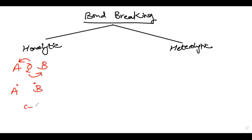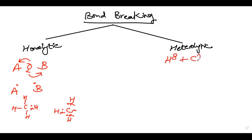For example, C-H bond: in homolytic fission you get a carbon free radical and a hydrogen free radical. In heterolytic fission, H delta-positive and C delta-negative are formed. This is because C is more electronegative, a covalent bond breaks, one of the bonded species takes the shared pair of electrons, and positive and negative ions are produced. Keep in mind that in organic chemistry you don't show the arrow for dative bonding.